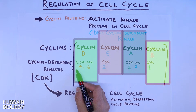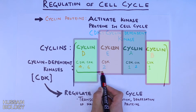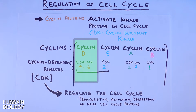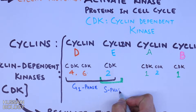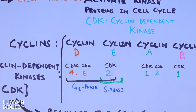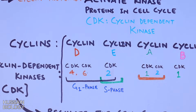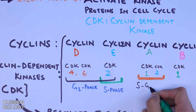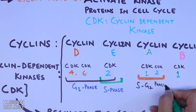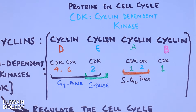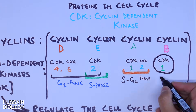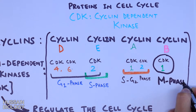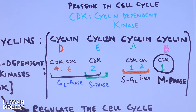CDK4 and CDK6 work in G1 phase. Then in S phase, CDK2 mostly peaks out. We also see CDK1 at the end of S phase. In G2 phase we get the activation of CDK1 and CDK2, whereas in M phase we see the activation of CDK1 by cyclin B.